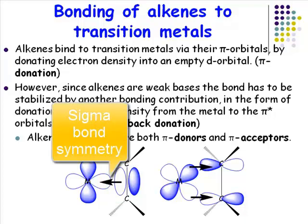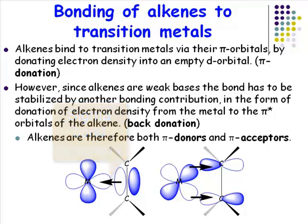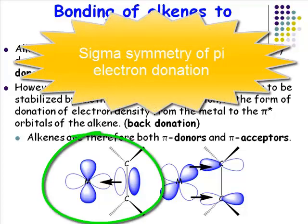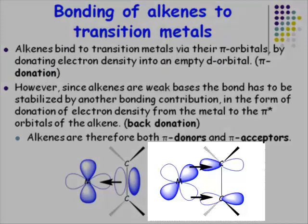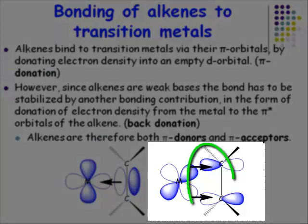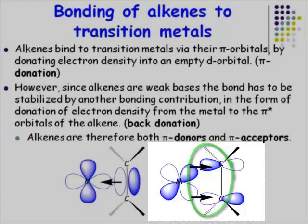I hope that doesn't muddy things too much, but it's worth explaining for those who say that's not a pi donor interaction in the sense we've seen before. It's not — it has sigma symmetry, but it is donation of pi electrons into a vacant orbital. For the acceptor interaction, there are no such issues: these are obviously pi star orbitals, and this is pi symmetry with respect to the metal-ligand axis.